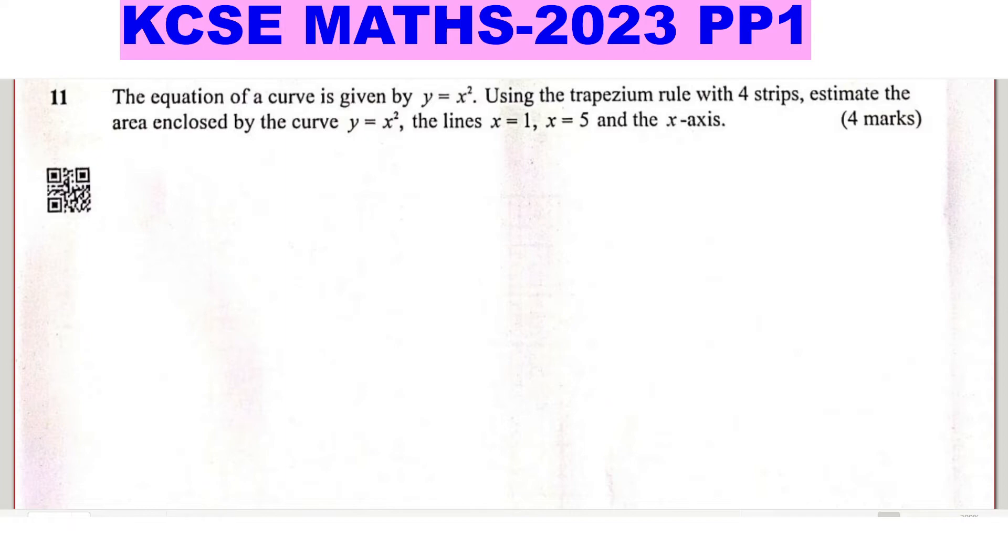To get the height, we take the difference in the interval from x equals 1 to x equals 5, so we take 5 subtract 1 divided by the number of strips required, and this will give the height of 1. So if we prepare a table of values from x equals 1 to x equals 5, you're going to use the uniform height of 1.